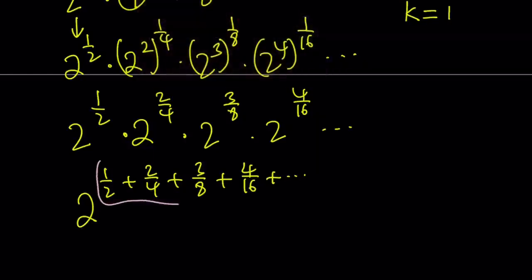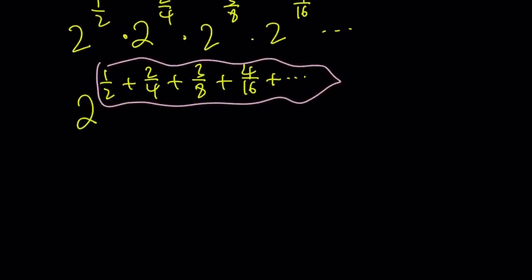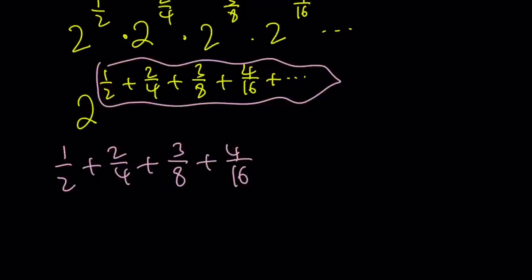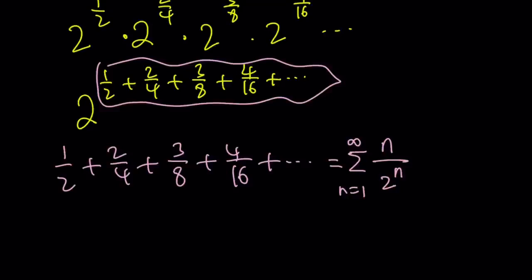We can basically write the exponents as a series. The exponent is 1 half plus 2 fourths plus 3 eighths plus 4 sixteenths, so on and so forth. Notice that the numerators are positive integers and the denominators are powers of 2 — it's like we have n in the numerator and 2 to the power n in the denominator. Now, how do we handle such an infinite sum? The denominator tells us this has to do with geometric series, where we have a power of something multiplied by something else.